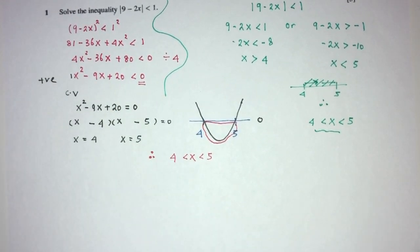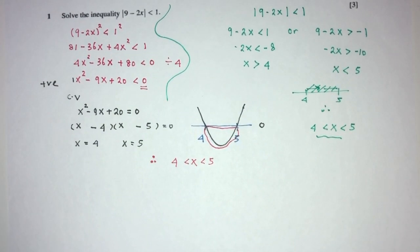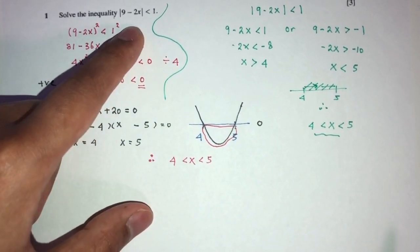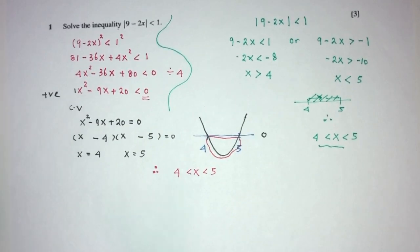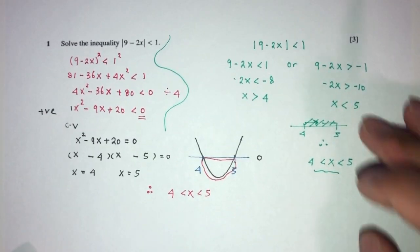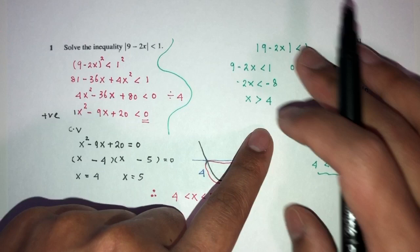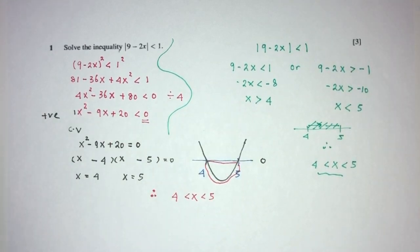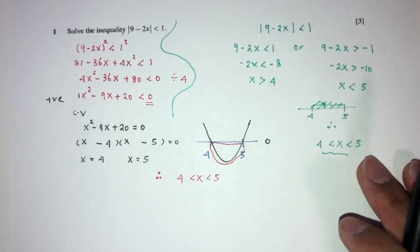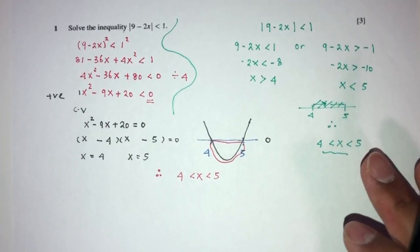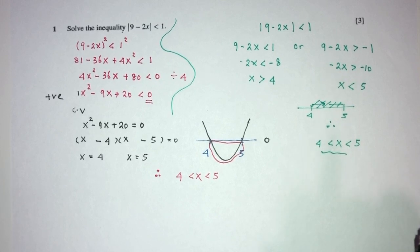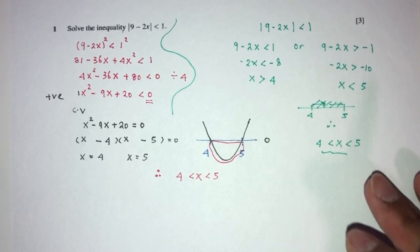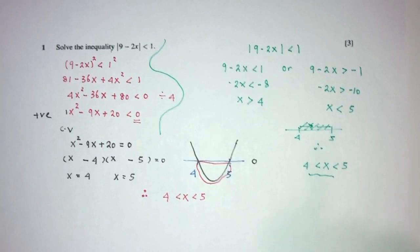So two ways of solving. One way is the brute force method — whenever you see modulus, you can square both sides and then solve. Or if you know this other way, we can break it down directly to find the values we need. x has to be between 4 and 5, and this is your question number 1.